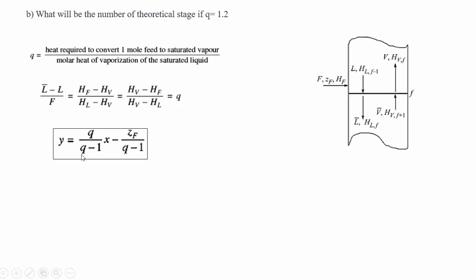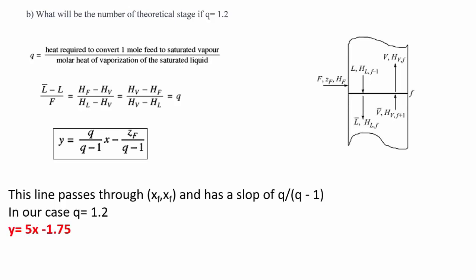This equation is called the Q line equation or the feed line equation. If you have the Q value, you will have the operating condition for the feed line. This line passes through the point xf, xf on the equilibrium diagram — xf, xf or zf, zf depending on your notation — and it has a slope of q over (q minus 1). The intercept will be minus zf over (q minus 1), where zf or xf is the mole fraction of the more volatile component in the feed.